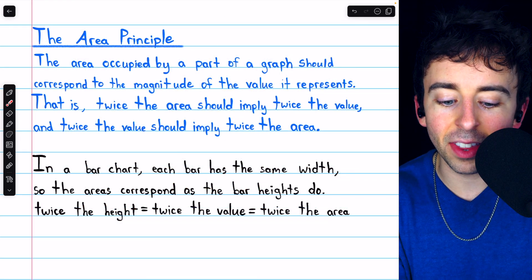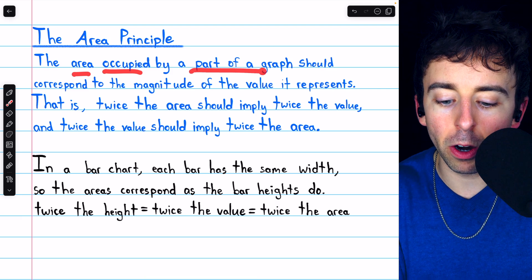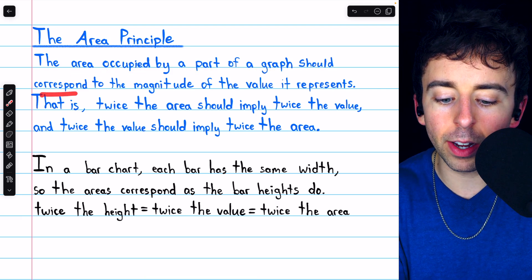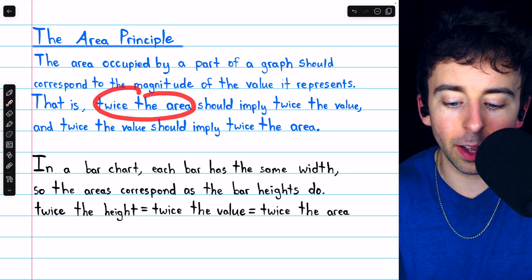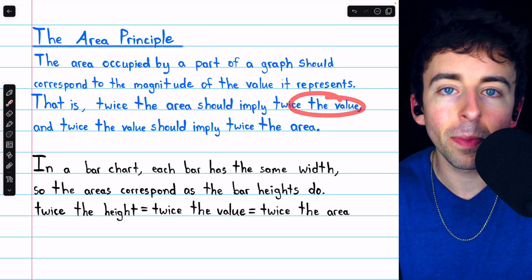The area principle states that the area occupied by a part of a graph should correspond to the magnitude of the value it represents, meaning twice the area should imply twice the value, and vice versa.